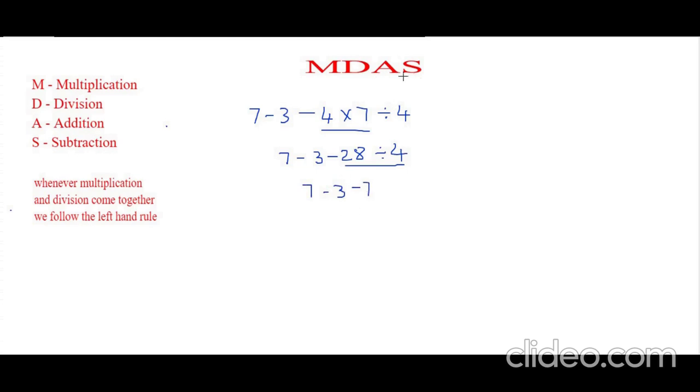Now addition and subtraction will go hand in hand. Since I have two negative numbers, I will add them first, which is 7 minus 10. So 7 minus 10 is minus 3. Isn't it very easy?